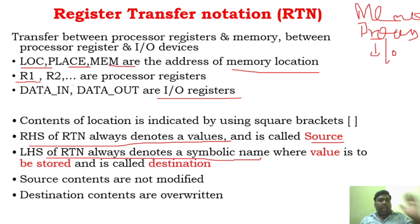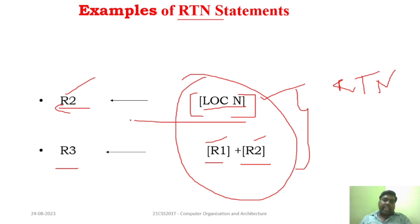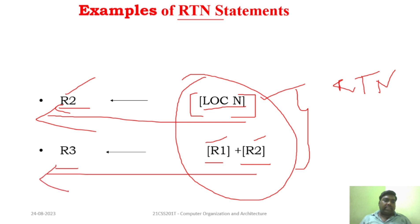The source content will not be modified. But the destination — even if R2 has any other information before — when this instruction is executed, the content of N will be overwritten in R2. So whatever information was in R2 will be gone. Similarly, by adding R1 and R2, the result will be stored in R3 — whatever information was present in R3 will be overwritten. But the information at the right-hand side will be preserved. That is called Register Transfer Notation.